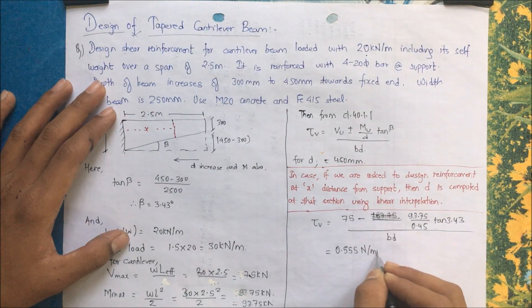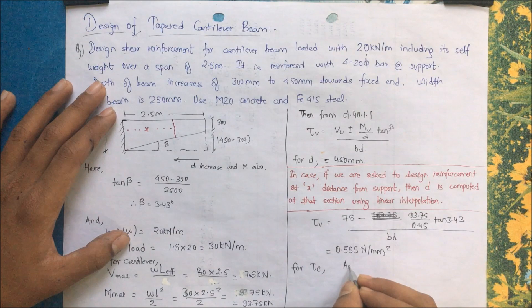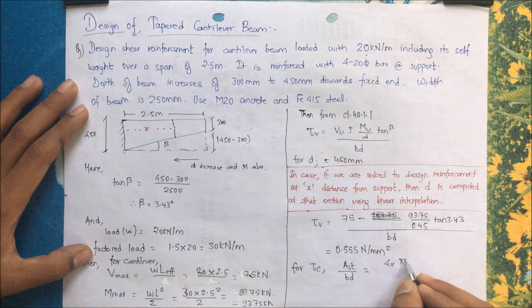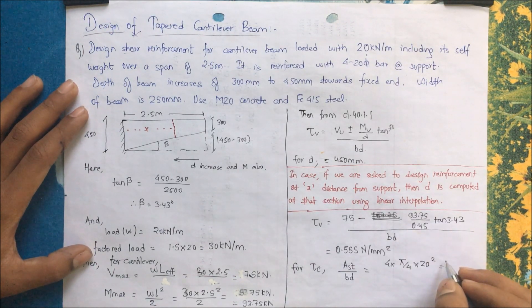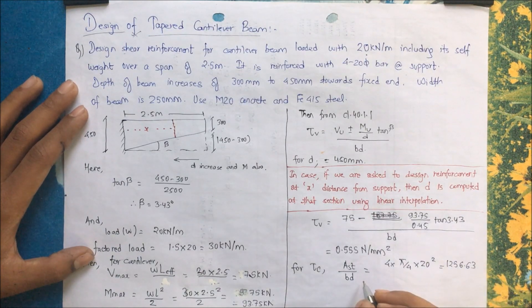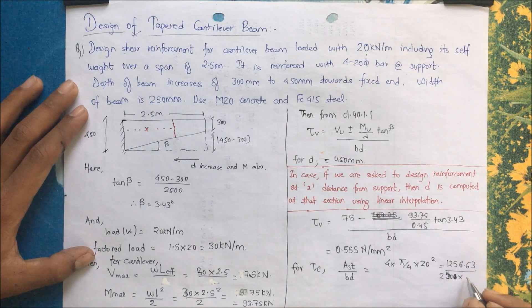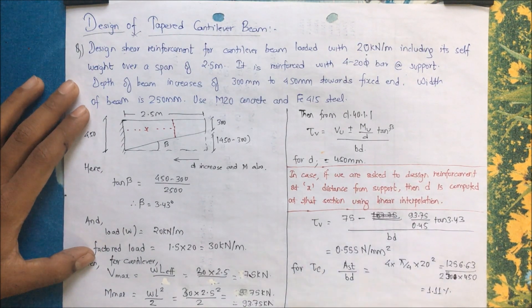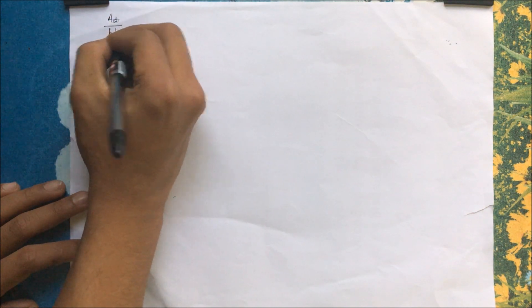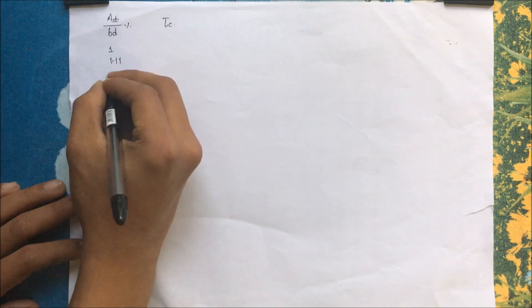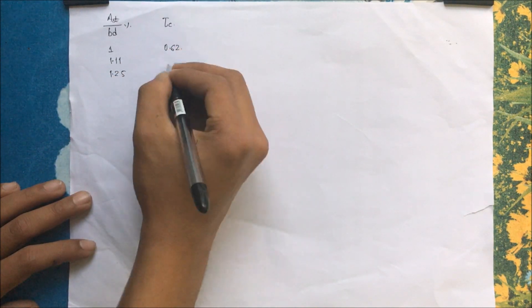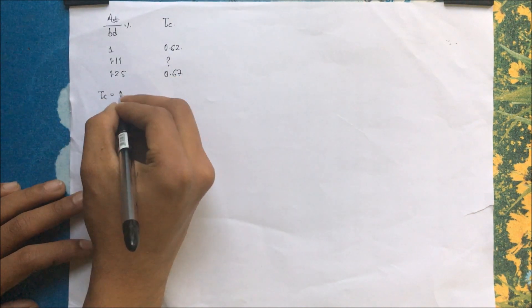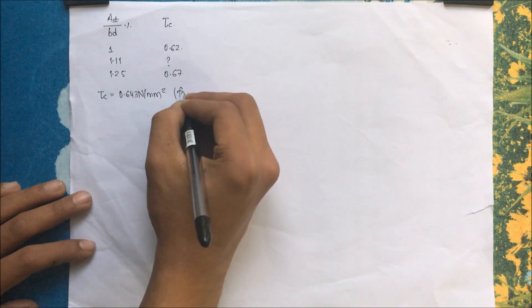For tau_c, the shear strength of concrete, we find the tensile steel percentage: A_st / (b·d) = (4 × π/4 × 20²) / (230 × 450) = 1.11%. From Table 19, for steel percentage between 1.0 and 1.25, the corresponding shear strengths are 0.62 and 0.67 N/mm². Using linear interpolation for 1.1%, tau_c = 0.643 N/mm².